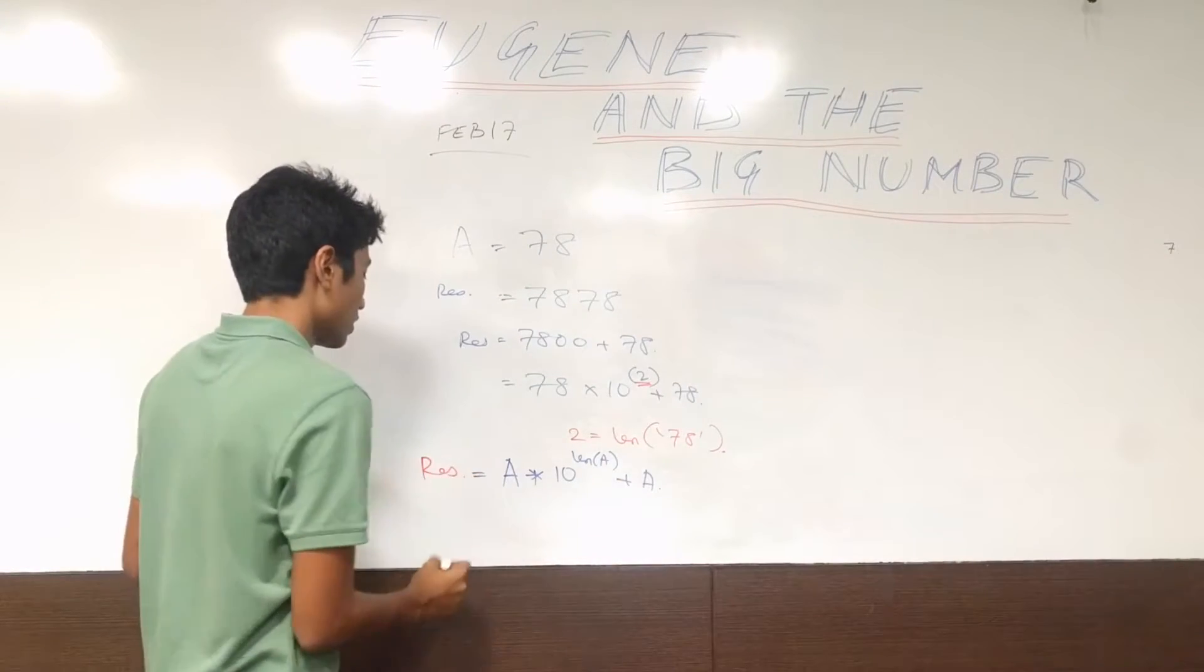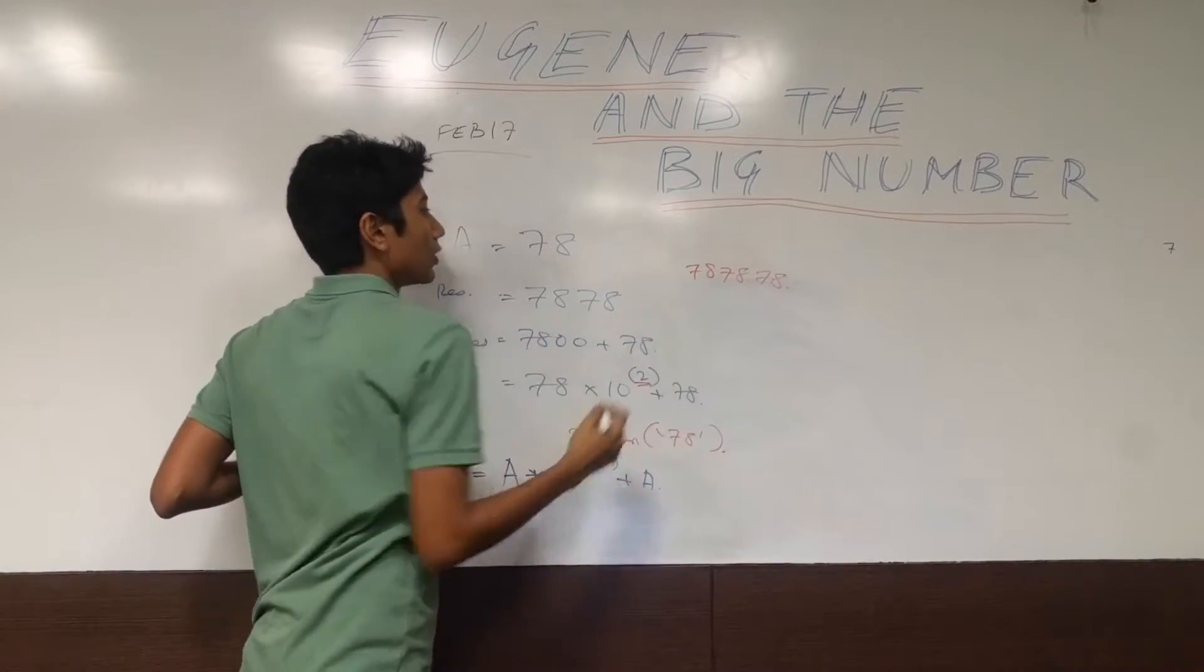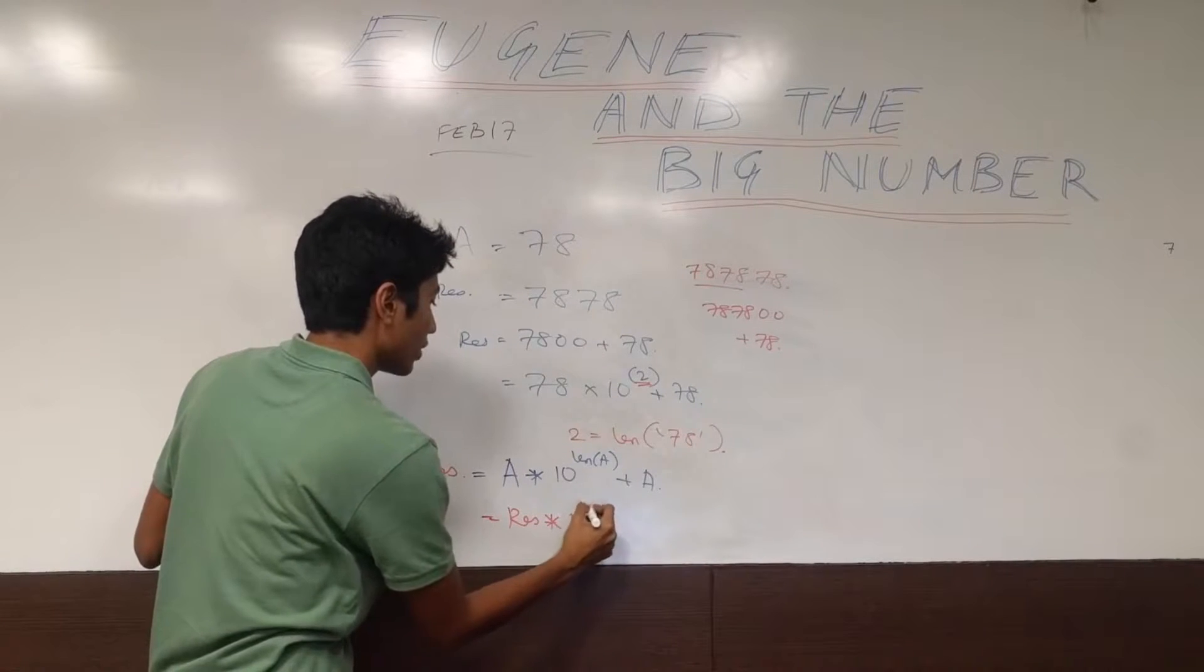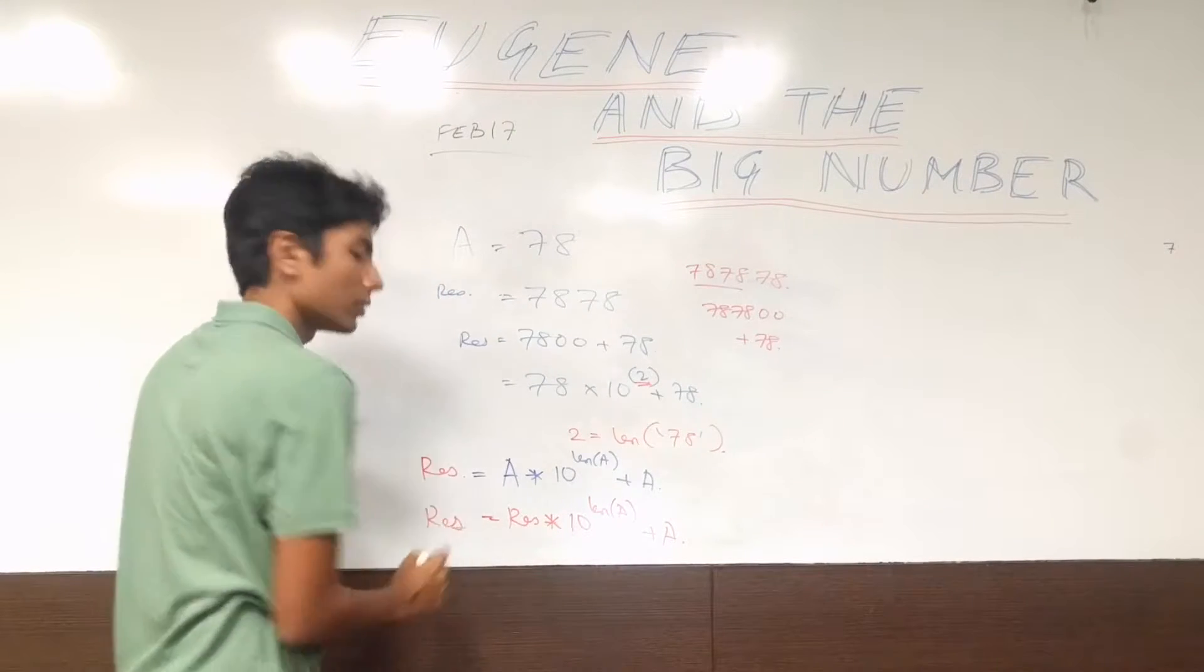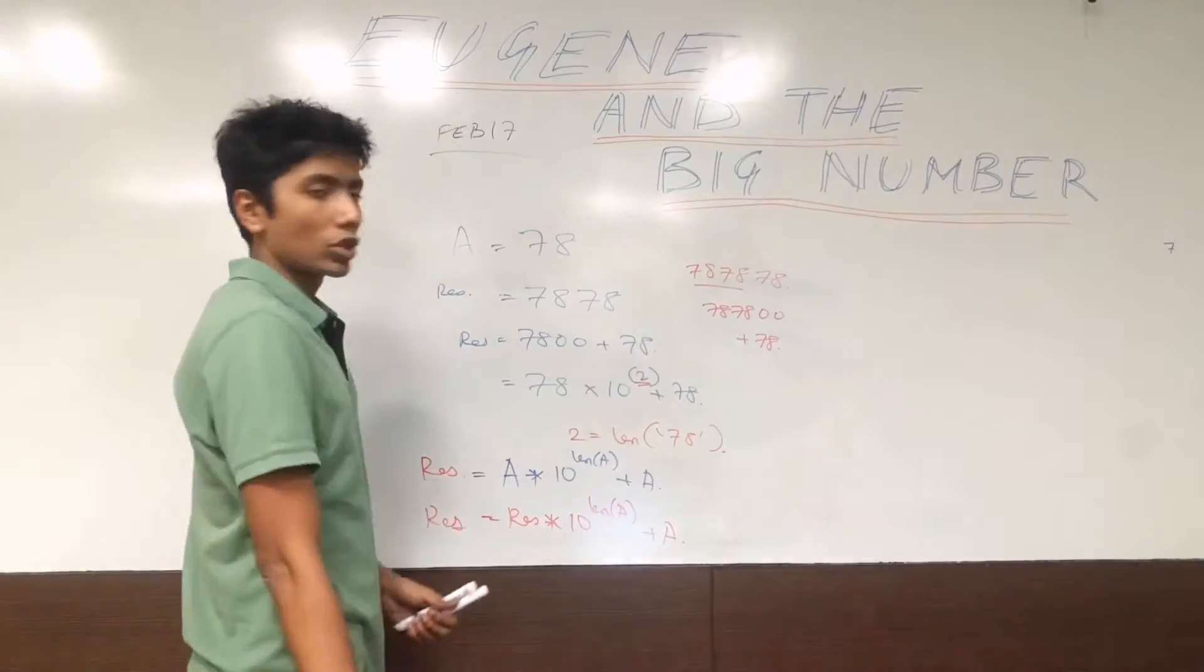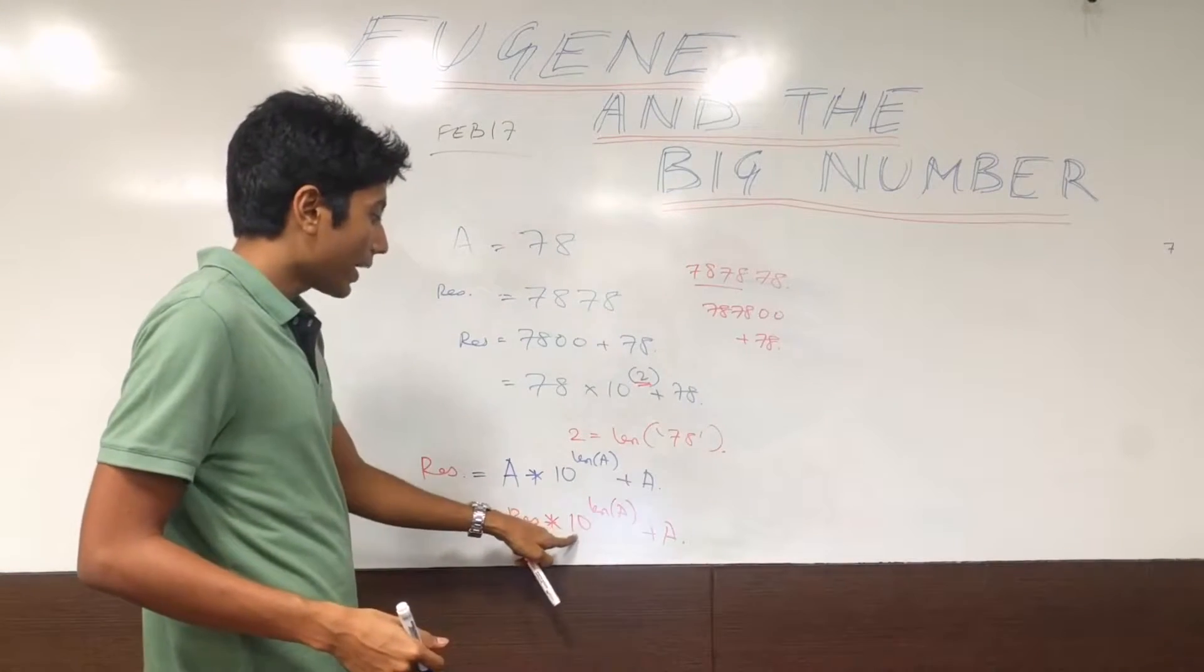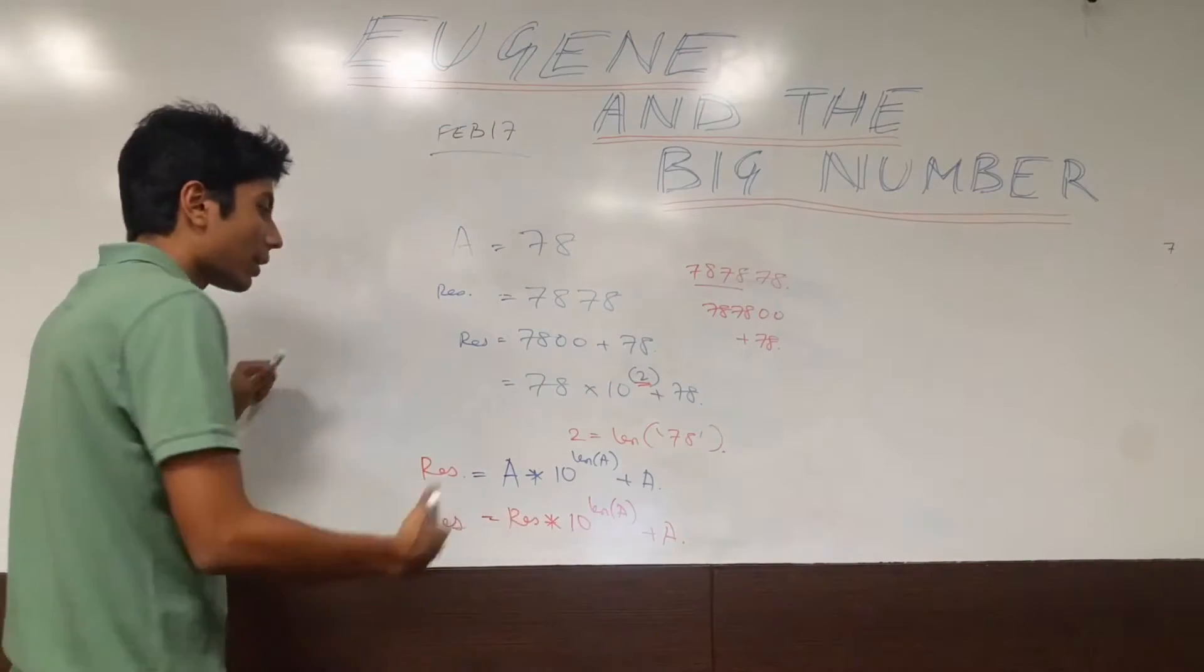And let's call this result. The next time that you are doing this so that is 78, 78, 78, 78. What you are basically doing is 7, 8, 7, 8, 0, 0 plus 78. So that is the result into 10 raised to the power the length of a plus a is your new result. So this is how you can iteratively find out the solution. If you try this though, this solution is a little too slow. The problem being that every time you are multiplying into 10 raised to the power length of a, you can pre-compute this value, but your result will come after a long time.